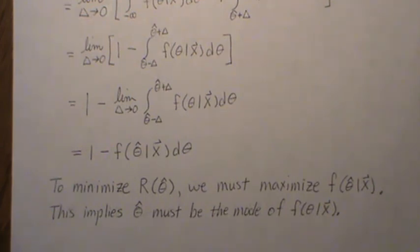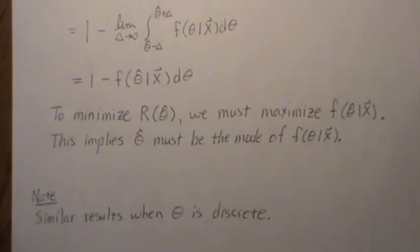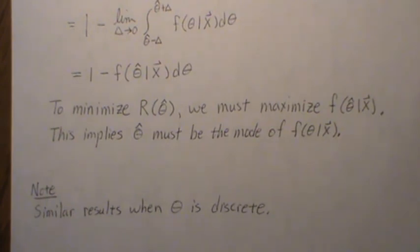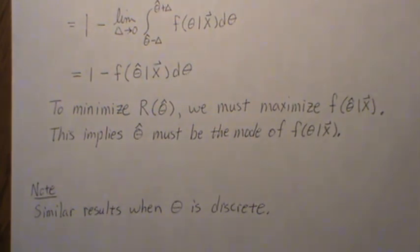To summarize: the mode of the posterior distribution is the Bayes estimator under zero-one loss. These results were shown for continuous variables, and you can similarly derive the same results for discrete theta — I'll leave that as an exercise. That's all for this video; hopefully you enjoyed it. Please like the video and subscribe so you don't miss the next one.